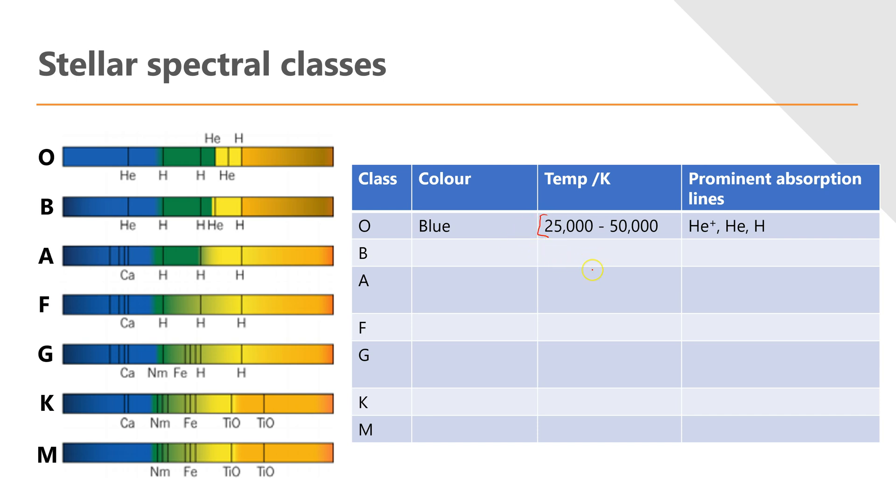So O class stars are blue, they have the highest temperature, and the main absorption lines we see here are of course hydrogen and helium - that's what the fuel of a star is. But we see helium plus ions, that is ionized helium where electrons have been stripped away. There's so much energy that the helium exists largely in an excited or ionized state.